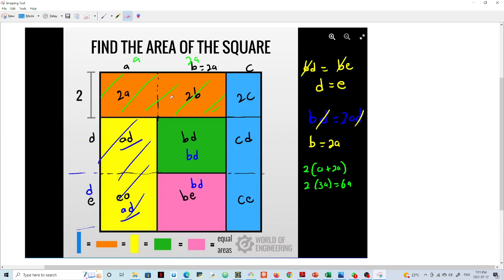So now we can equate the orange area with any other area. So let us say we say that the orange area 6a is equals to bd, the green area. So 6a is equals to bd.